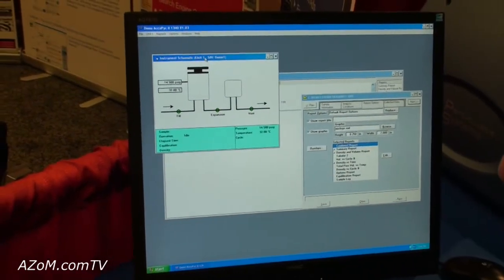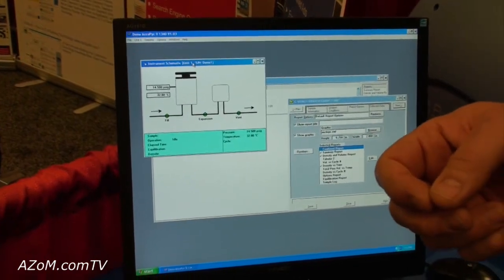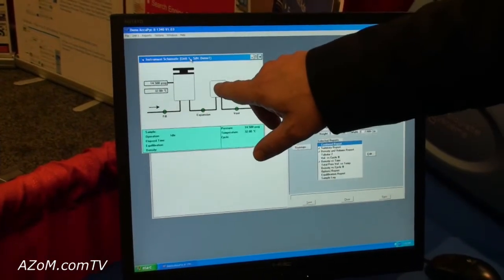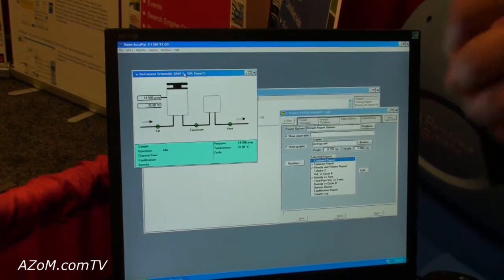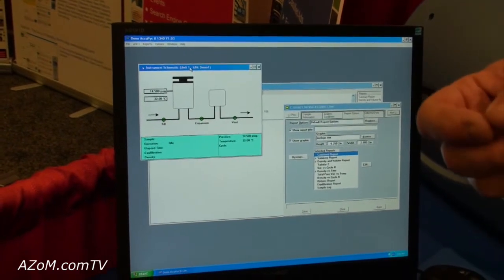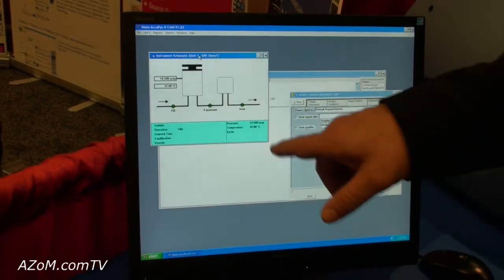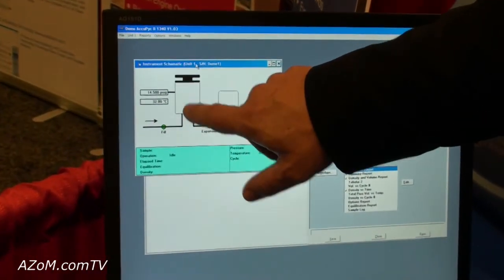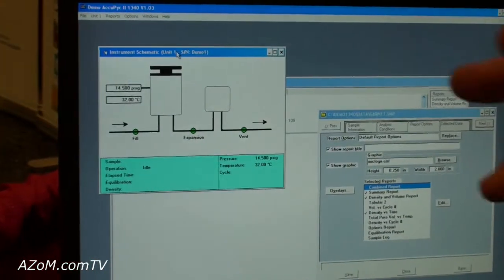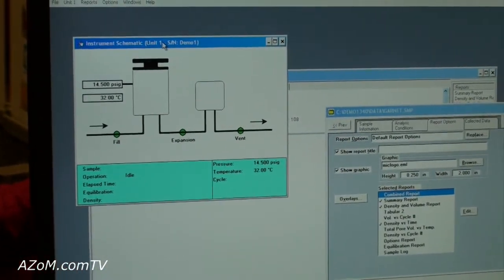We're able to do this because we have calibrated the sample chamber and the expansion chamber with NIST traceable calibration spheres. Once those known spheres are entered and analyzed, the microprocessor records the sample chamber and expansion chamber and stores those for future unknown sample measurements.